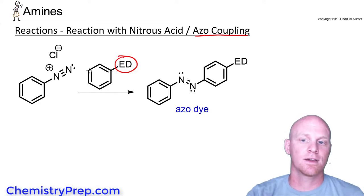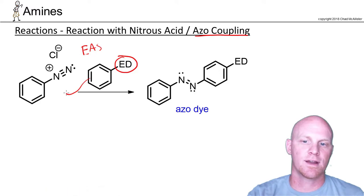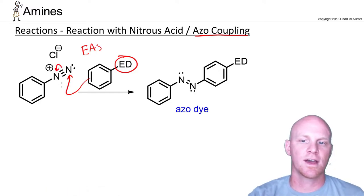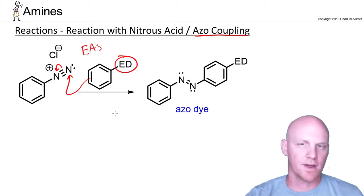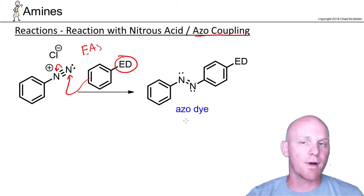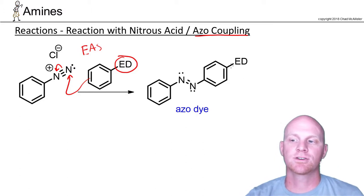We think it goes through an EAS reaction. We're going to get electrophilic aromatic substitution attaching to the nitrogen, kicking these electrons over to the other nitrogen, leading to this lovely structure. We need to deprotonate and finish off the EAS reaction — not showing the whole mechanism — but it leads to this lovely structure.